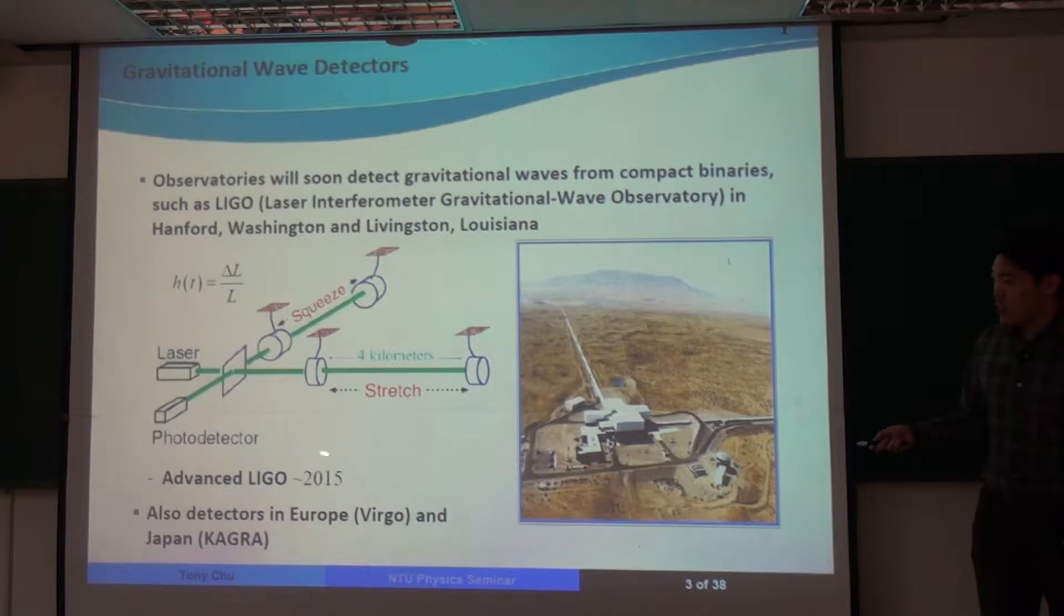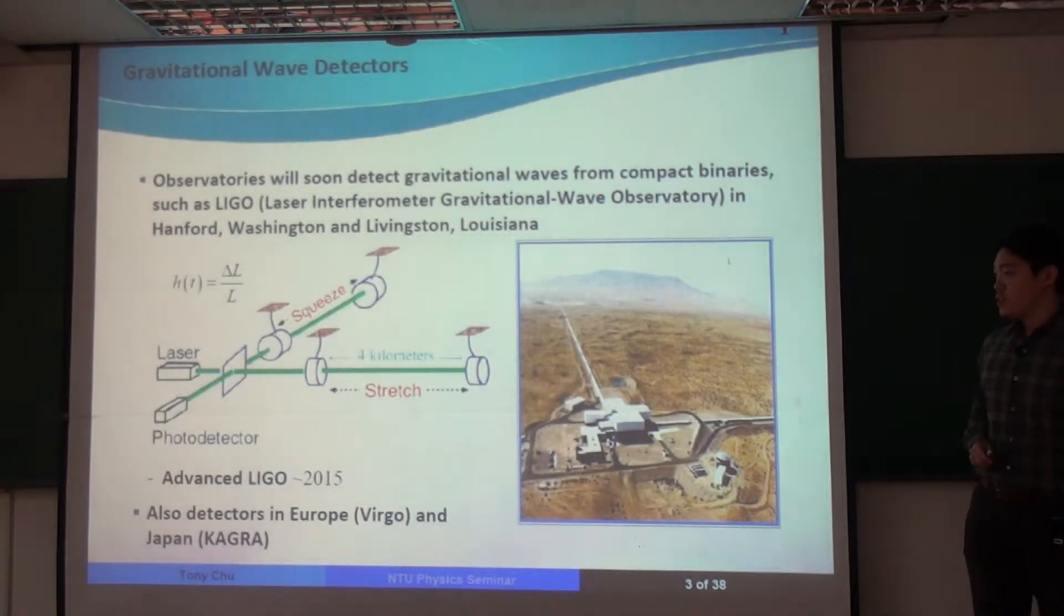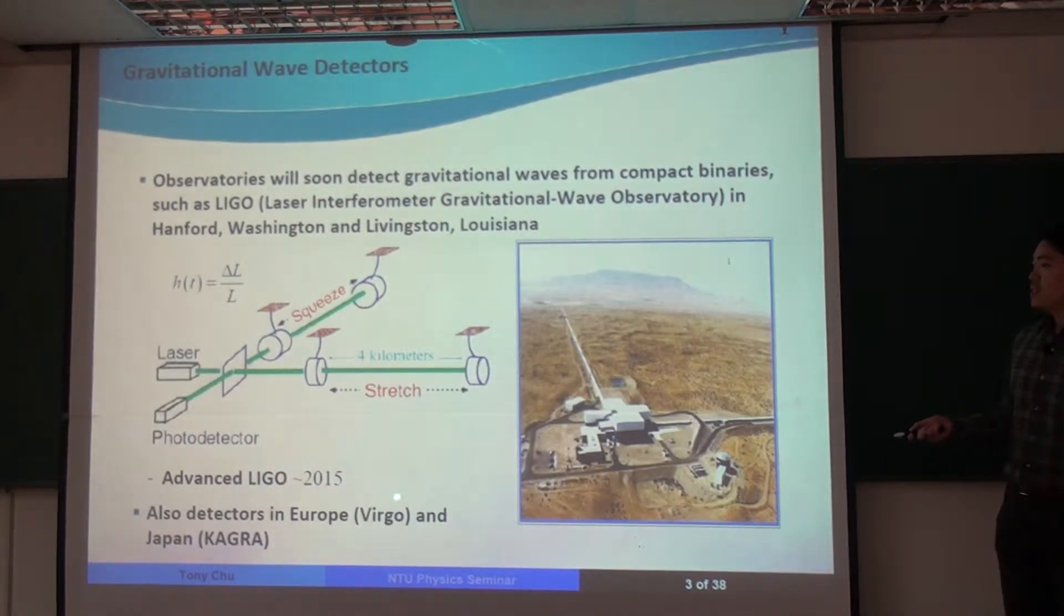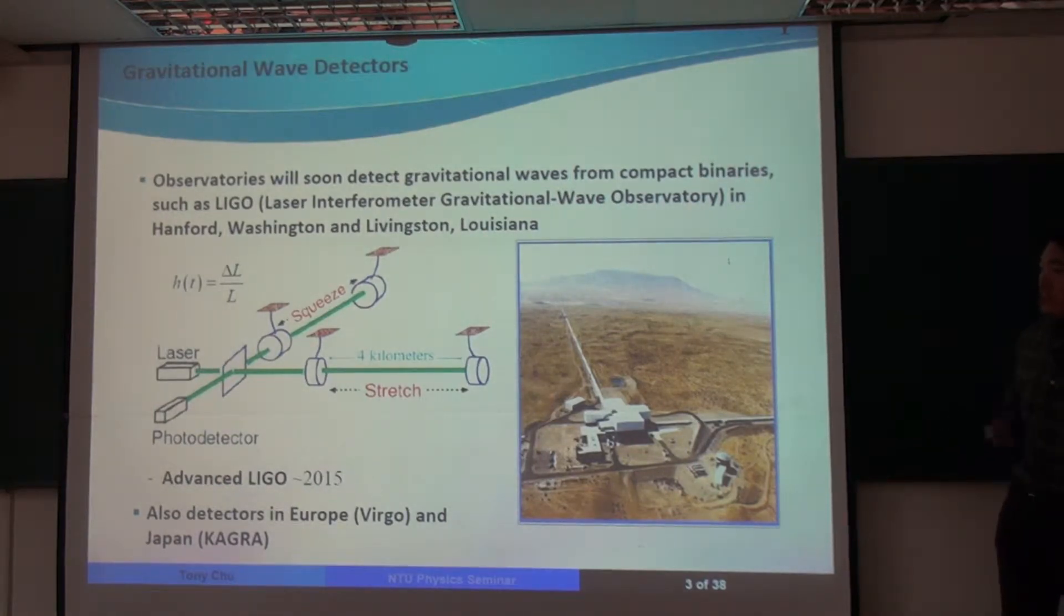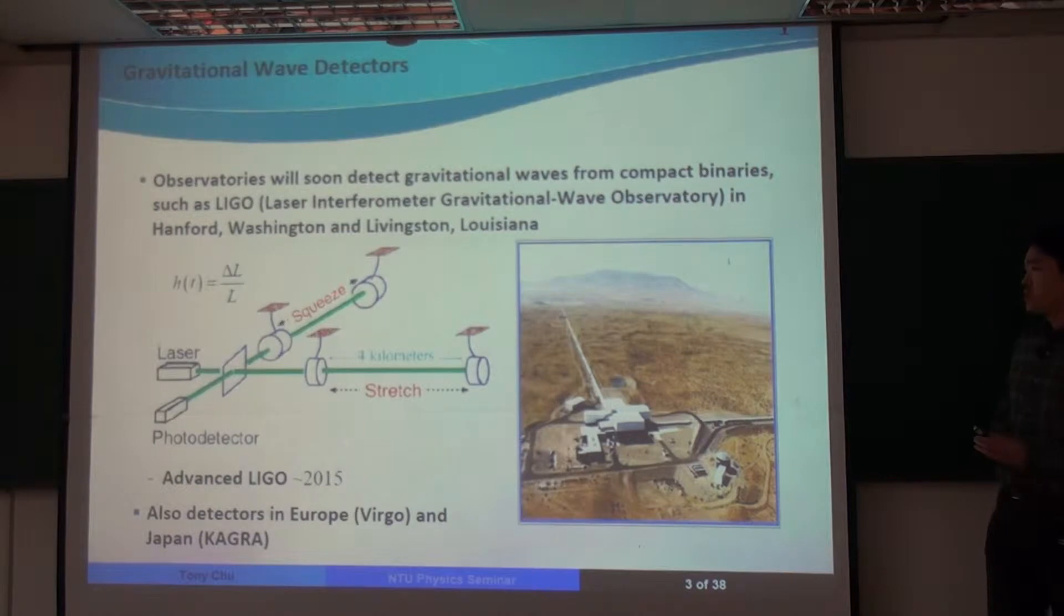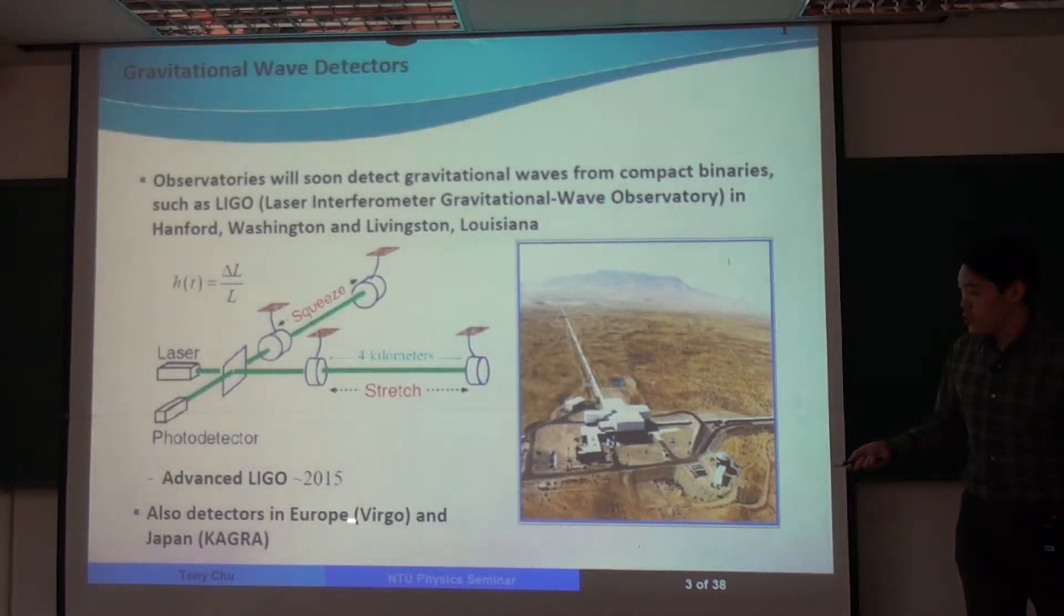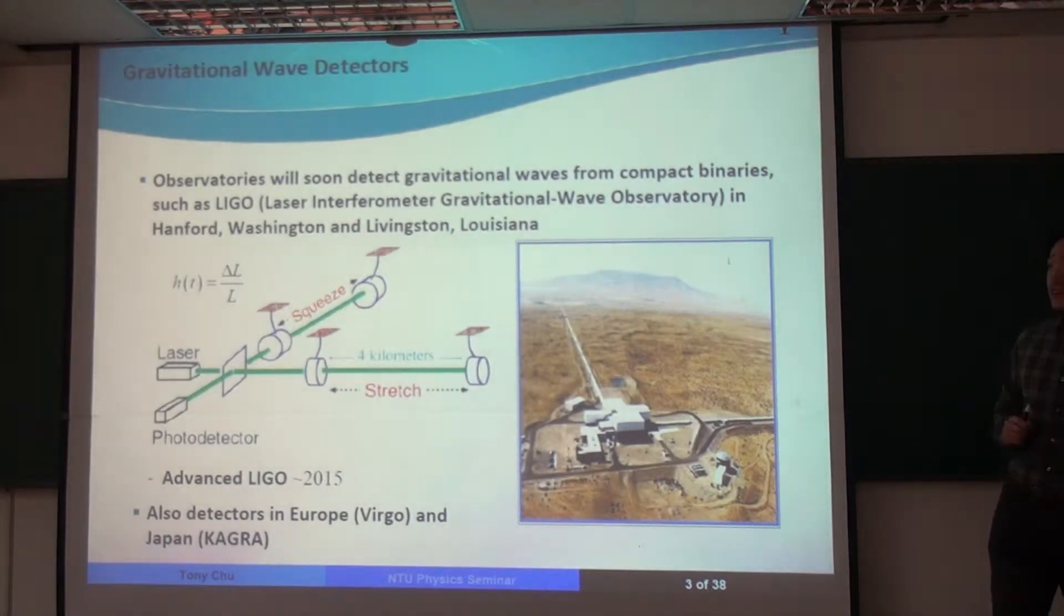And that change in the length here, delta L, is related to the strength of the gravitational waves that pass through. And that I'm calling H on this slide. The next generation of LIGO, called Advanced LIGO, is expected to come online around 2015. And so this is a very exciting time in the community, because it's expected that if there are in fact binary black holes, then Advanced LIGO will be able to detect them. And there are also other detectors. One in Europe is called VIRGO, and the other in Japan is called KAGRA.